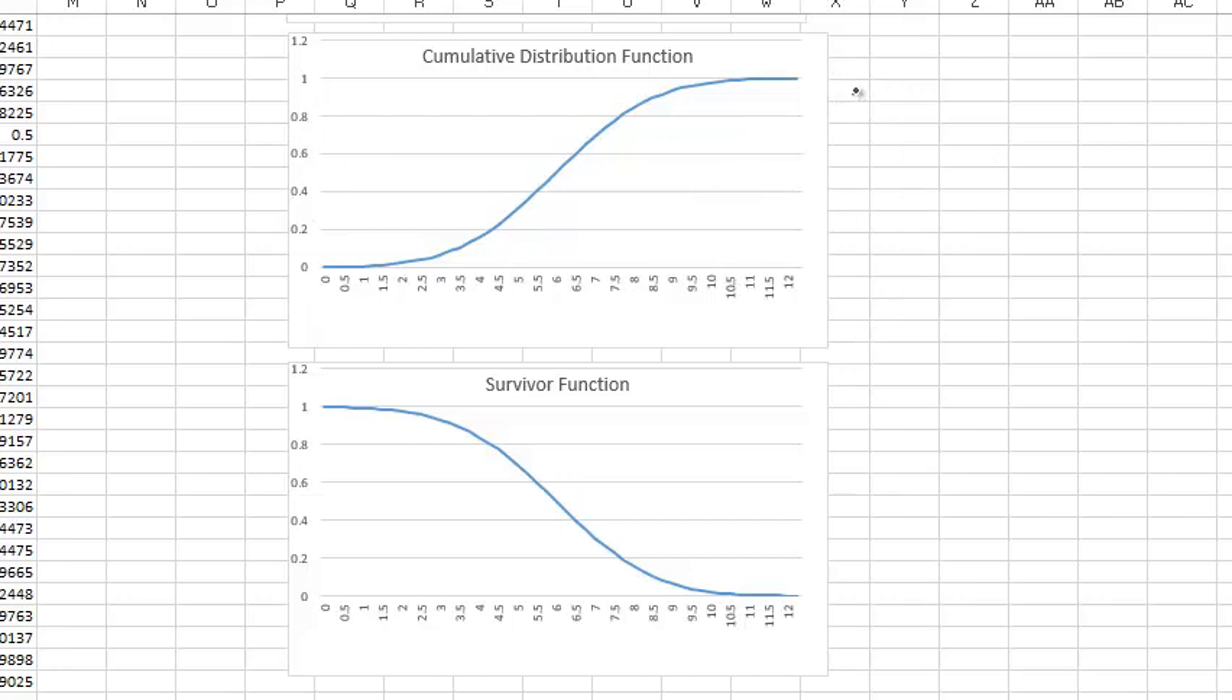So the CDF, we said, was the probability that some random variable x was less than or equal to some value a, and that's the graph of that probability. So the survivor function is 1 minus the CDF, which is equal to 1 minus this probability statement of x less than or equal to a, which is the same as saying that the survivor function is the probability that the random variable x is greater than some a.